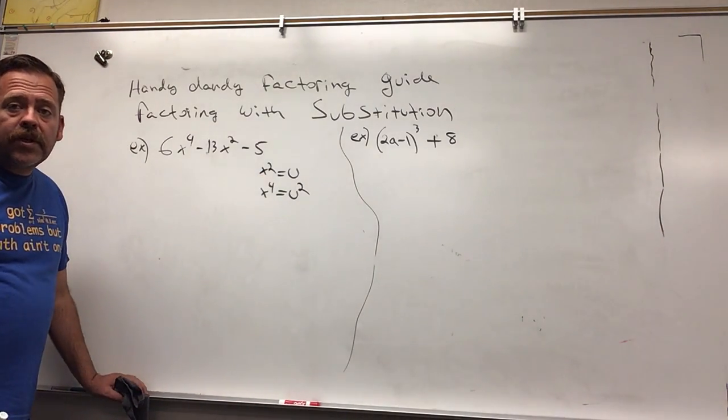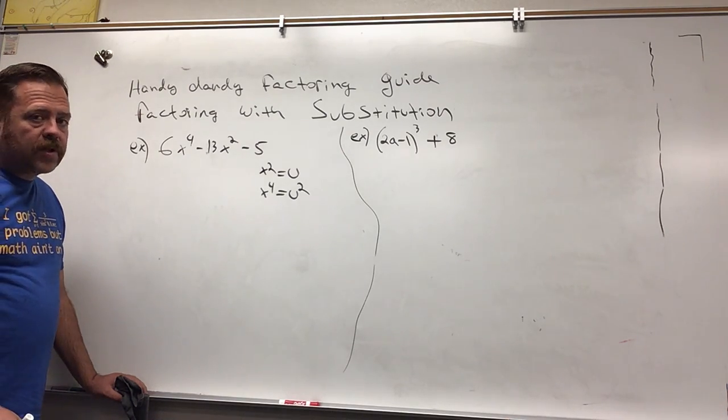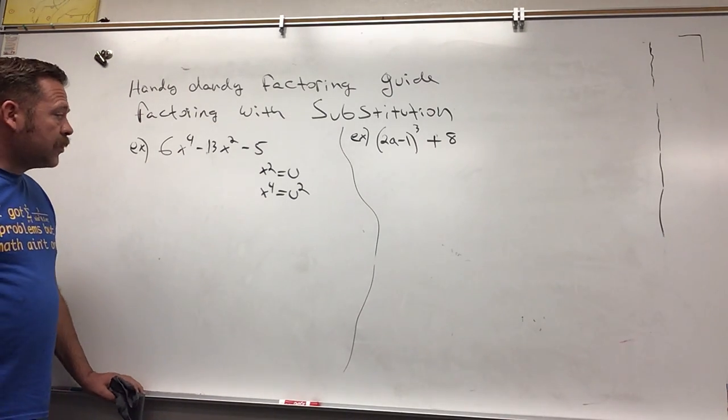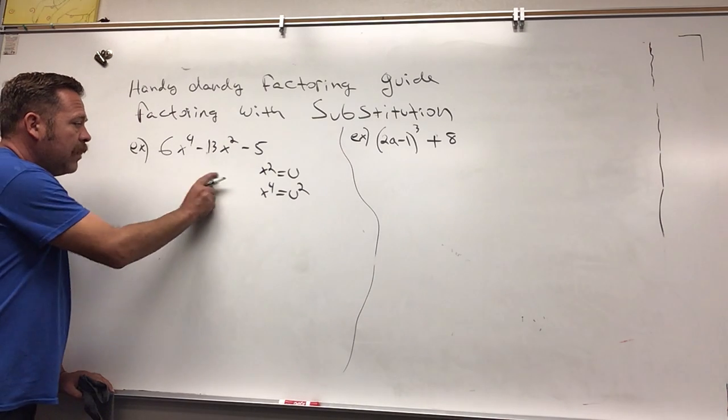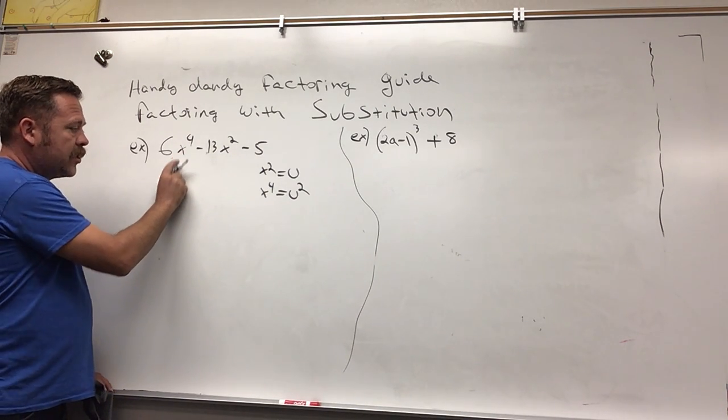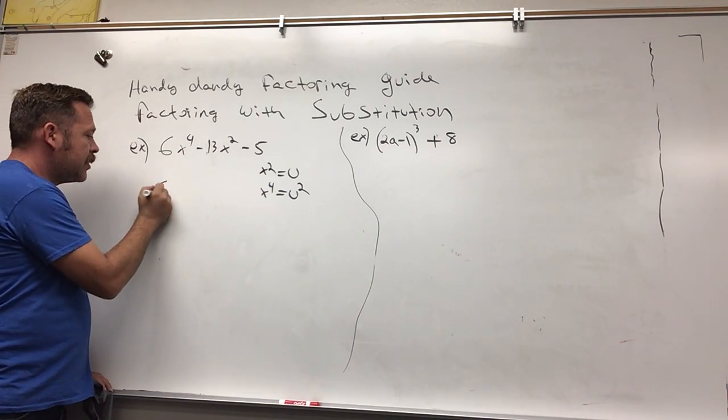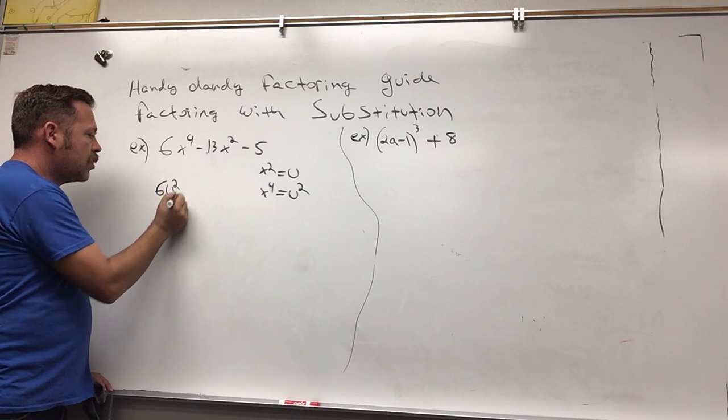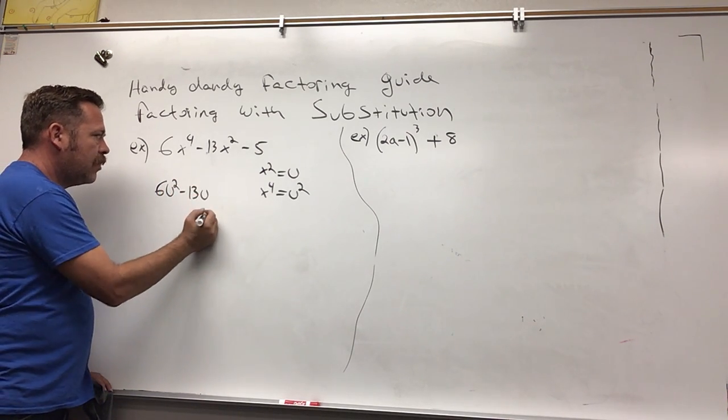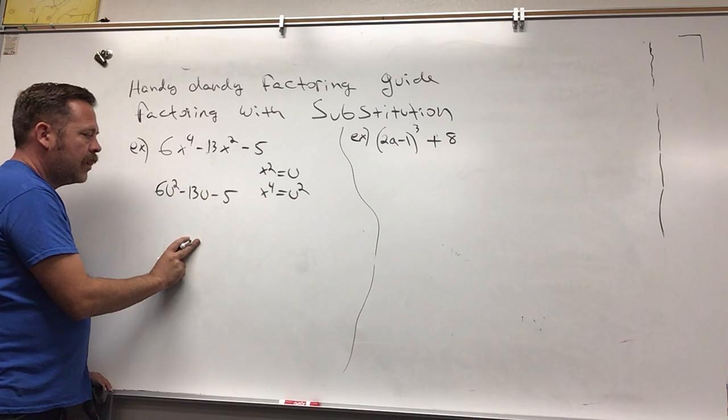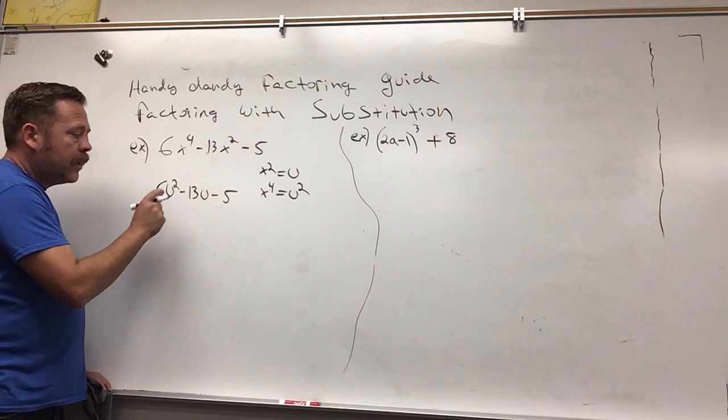I don't know why they always use u for substitution. I don't make the rules, I just work here. So if I rewrite it by substituting x to the fourth with u squared, I would have 6u² - 13u - 5. Now it's quadratic, now we can use AC method.